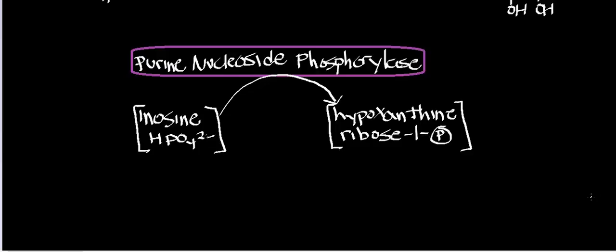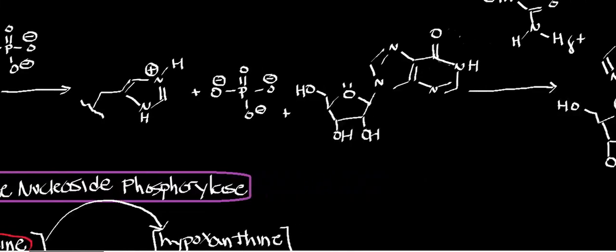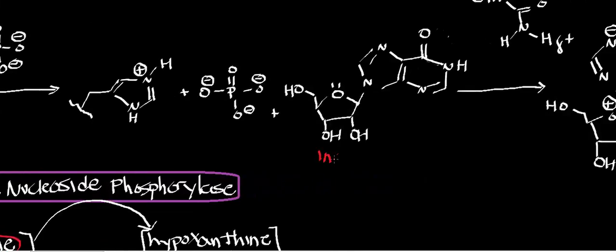So we started with adenosine monophosphate, and through a phosphatase, we got adenosine. Once we had adenosine, we used adenosine deaminase, and we spent a few videos on that. And once we used adenosine deaminase, we got this molecule right here, which is called inosine. If you wanted to get the chemical structure of inosine, it's shown right here.